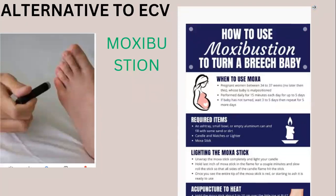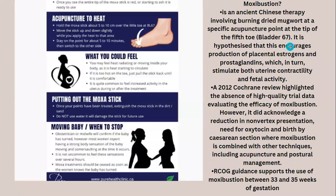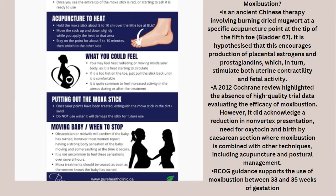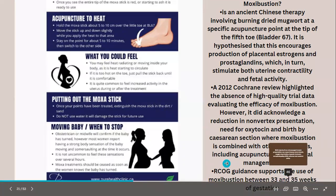If the patient declines ECV, for patients at 32–35 weeks with persistent breech, you can offer moxibustion. Moxibustion is an ancient Chinese therapy involving burning dried mugwort at a specific acupuncture point — the tip of the fifth toe at dermatome BL67. It is hypothesized to encourage release of placental estrogens and prostaglandins, causing stimulation of uterine and fetal activity. Clinical trials show it reduces non-vertex presentation and need for oxytocin when combined with acupuncture and postural management. RCOG supports the use of moxibustion between 33 and 35 weeks of gestation.